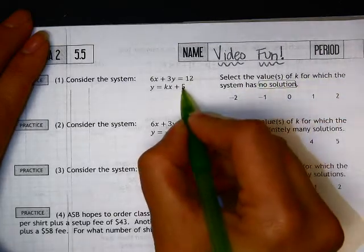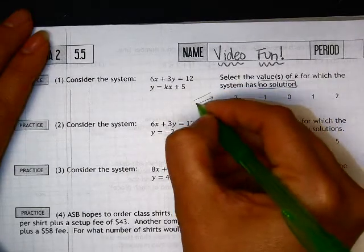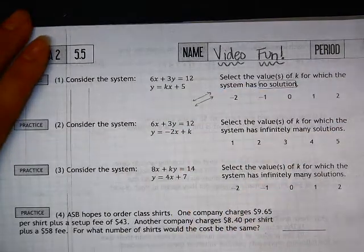If you recall, if two lines have no solution, that means they are not intersecting, which means they are parallel to each other.